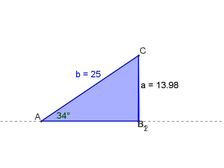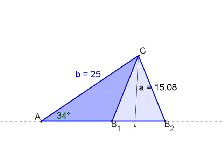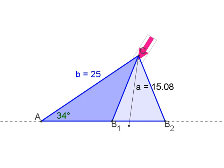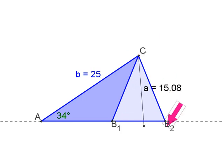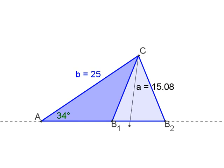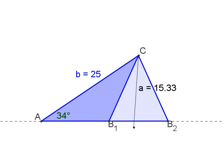If I make a even bigger, I enter the ambiguous territory. Now I have two possibilities: I can either use this leg and form this darker triangle, or I could use this other leg and get a different triangle. It's ambiguous — it's not clear from the given information which one to use. That's why your geometry teacher told you to stay away from SSA.